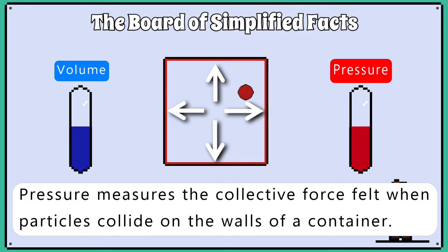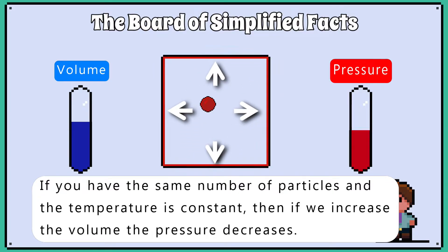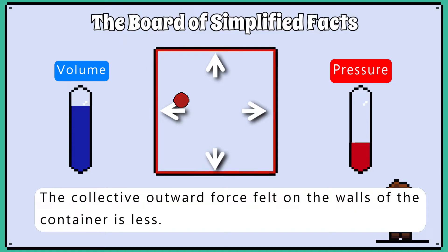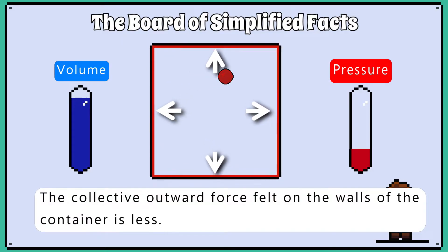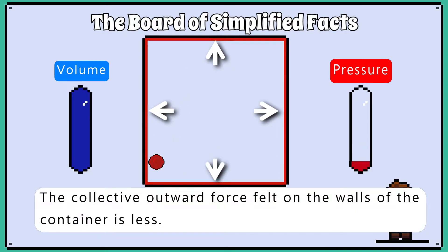Pressure measures the collective force when particles collide on the walls of a container. If you have the same number of particles and the temperature is constant, then if we increase the volume, the pressure decreases — the collective outward force felt on the walls of the container is less.